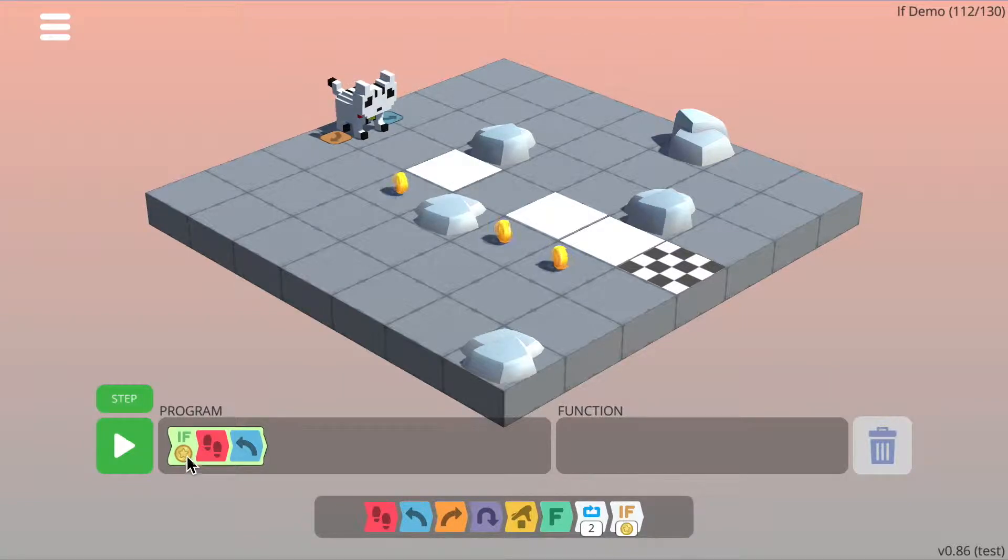You can change the condition parameter by clicking on it. So for example, here we can say, if the cat is on a white tile, walk forward and then turn left.